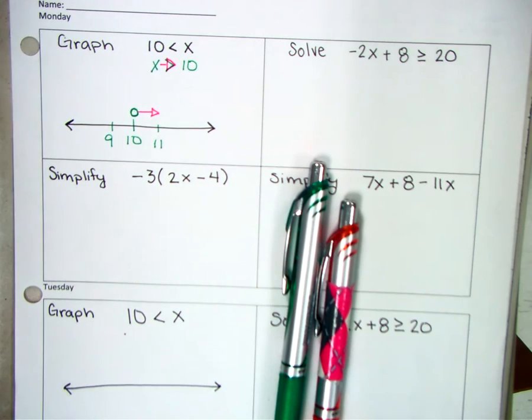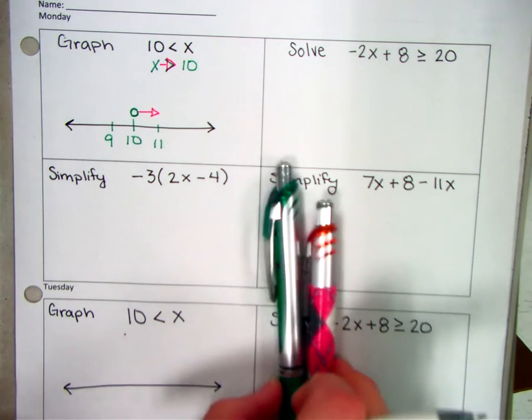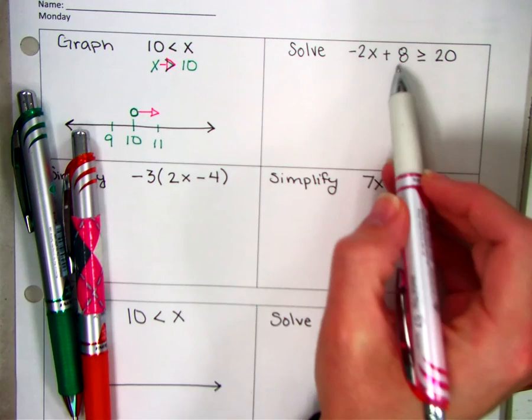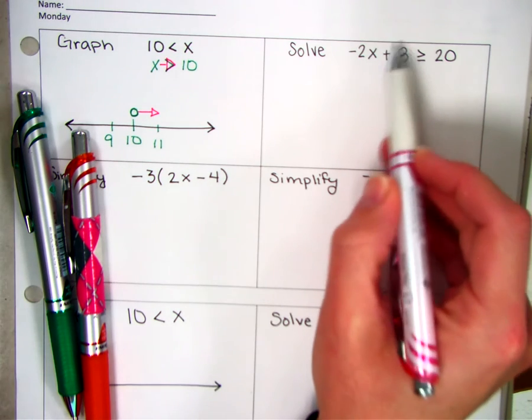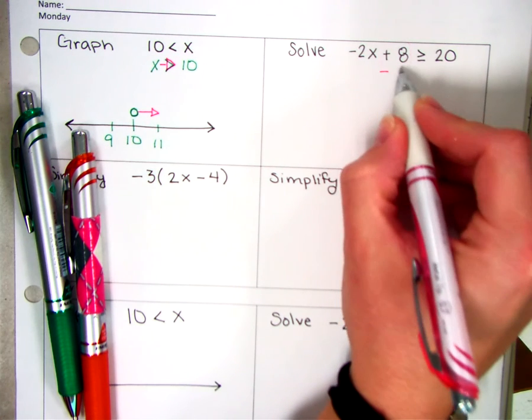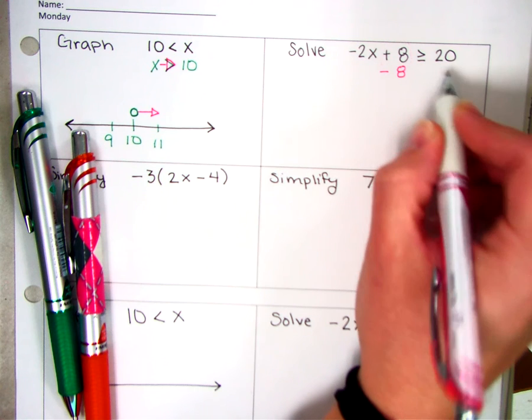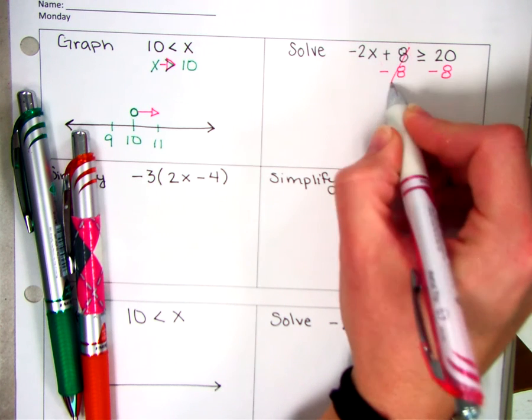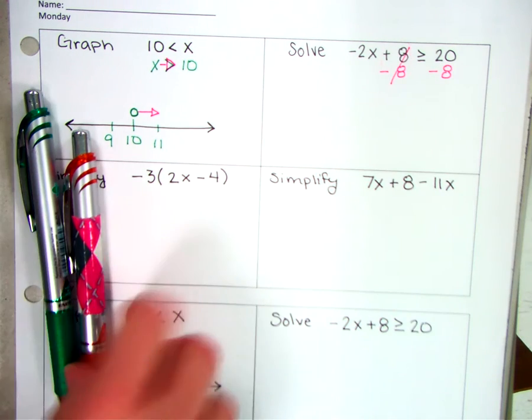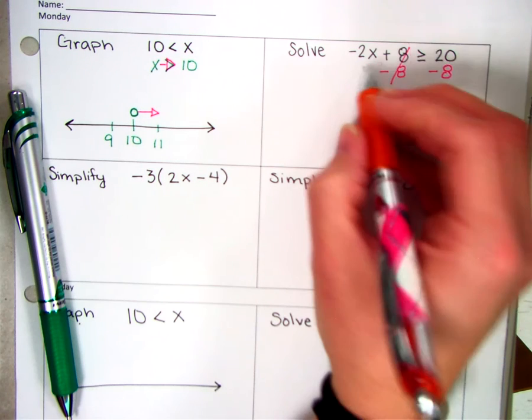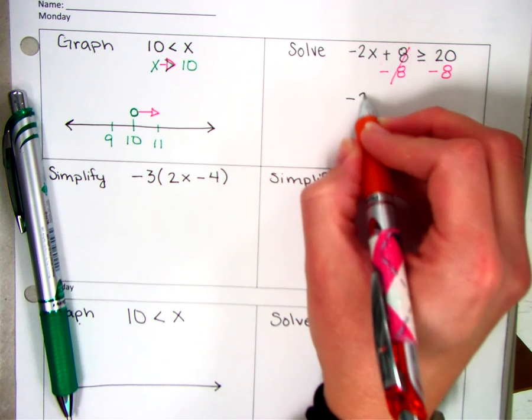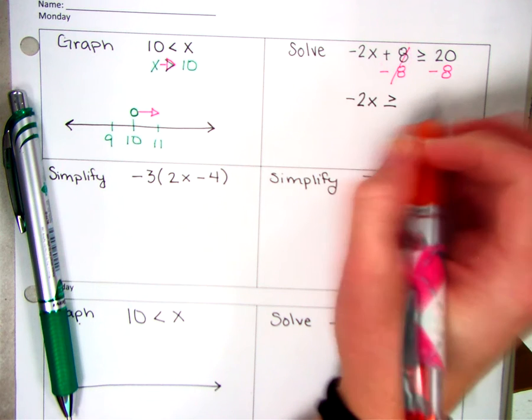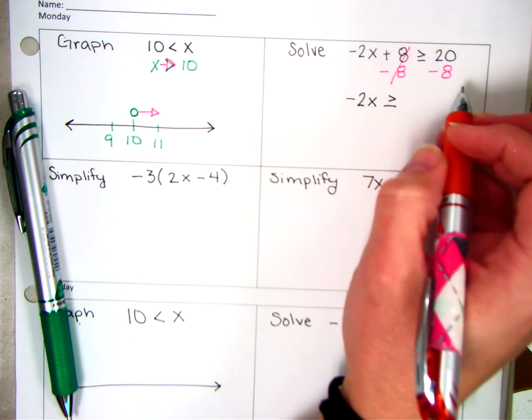Okay, the second problem over is one that we've been working on, solving a two-step equation. So to solve the two-step equation, you need to do your addition subtraction piece first. Okay, so I'm going to subtract 8 from both sides. I'm going to bring down my -2x, that's still there.